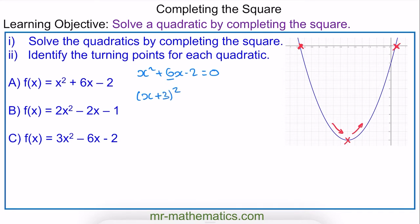But when we square this, we need to see what happens. So we have x plus 3 multiplied by itself. When you expand these two brackets, we get x squared plus 6x plus 9. Now here we have an unwanted 9 term, so we need to take away this 9 from our square, and this is completing the square.